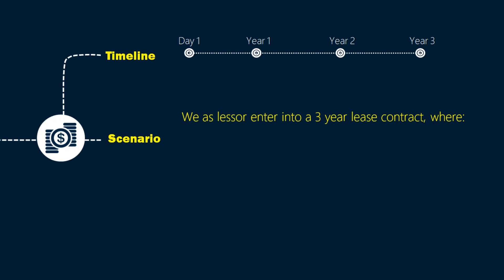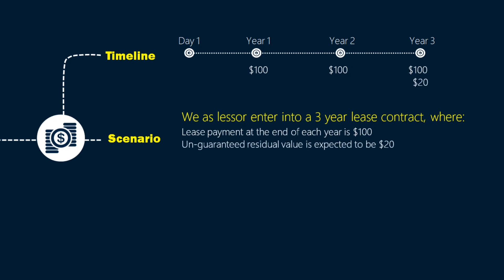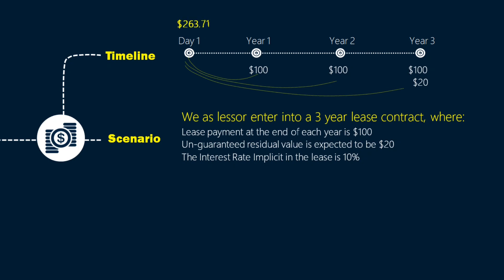According to the contract, the lease term is 3 years. At the end of every year, the lessee will pay us $100. At the end of the lease term, we would receive the asset back, and the scrap value at that time is expected to be $20. The interest rate implicit in the lease is 10%. Present valuing all those amounts — $100 each year and $20 at the end of the lease term — by the interest rate implicit in the lease, we get $263.71.